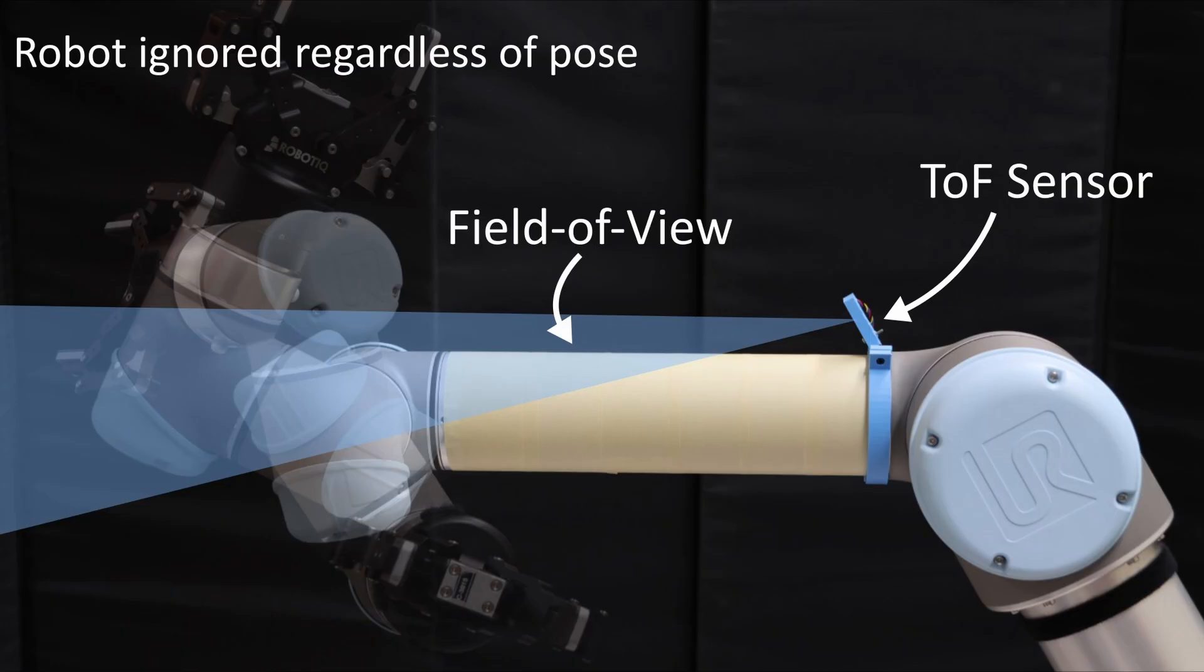Because our method differentiates between the robot and other objects, it allows flexibility in sensor placement to achieve more efficient coverage of a radius around the robot arm, like the sensor configuration shown here.